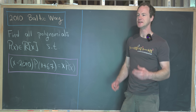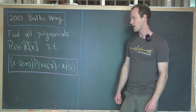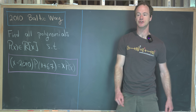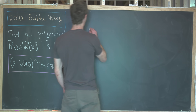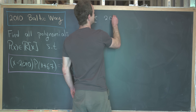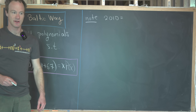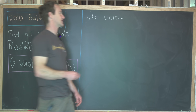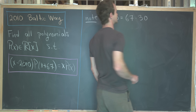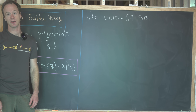Whenever you see something like this, your first inclination should probably be to see how these numbers are related to each other. We can easily check that if we take 2010 and divide it by 67, we actually get exactly 30. So that's kind of nice — we have 30 times 67.